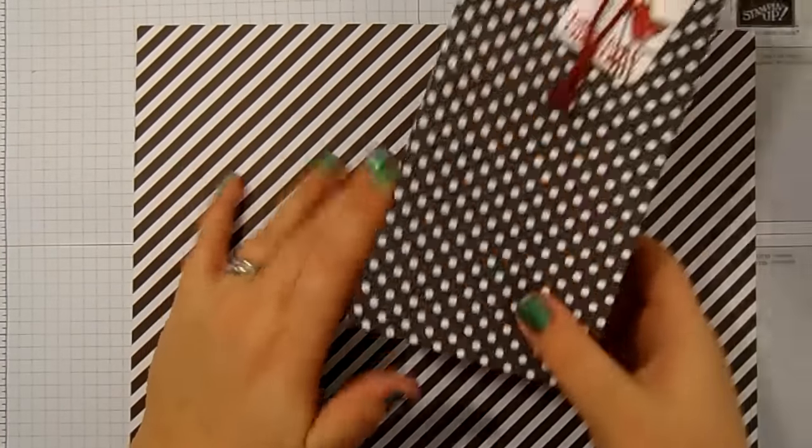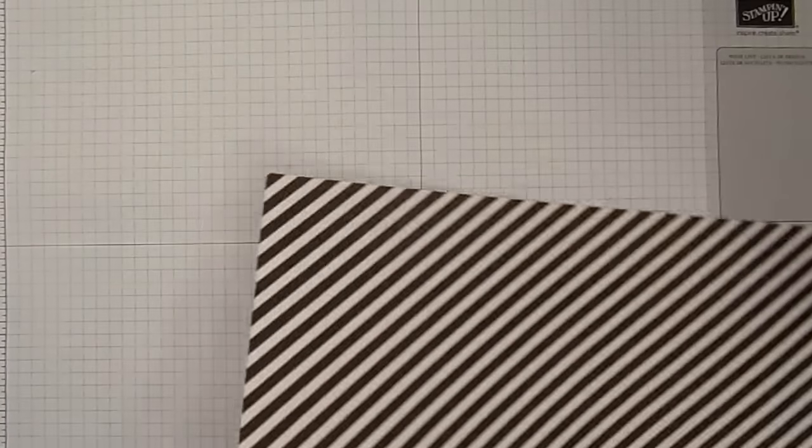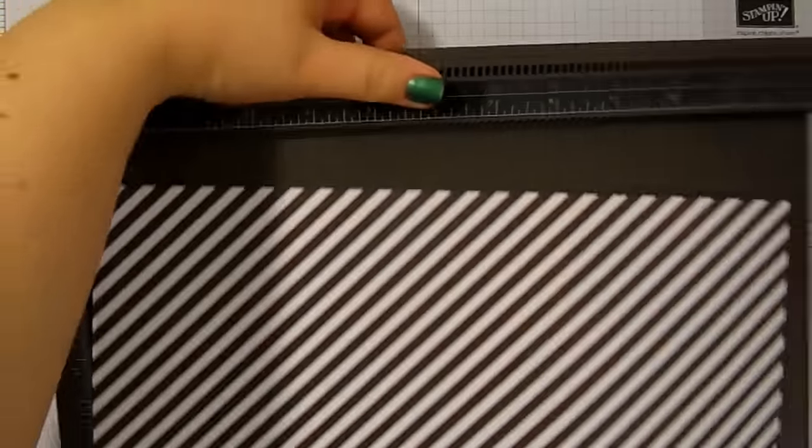Both of them use a piece of 12 by 12 designer series paper. This is out of the same stack as this. We are using our neutrals designer series paper stack today. This is early espresso and I've got chocolate chip here.